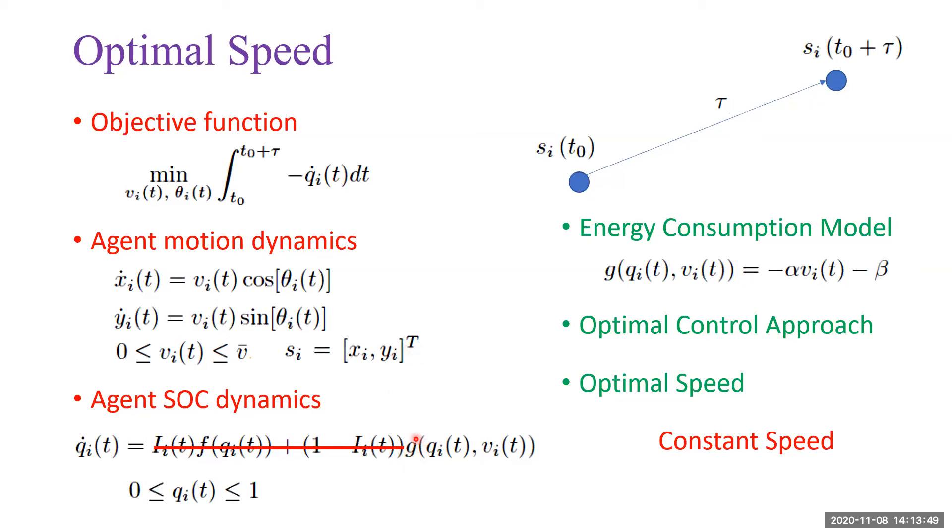Here is the objective function to minimize the energy cost to travel between two locations. Here the agent is in energy depletion mode. If the energy consumption model has this form, the first part is due to motion, the second part is due to sensing. We use the optimal control approach. We find the optimal trajectory is to follow a straight line connecting two locations, and the optimal speed is the constant speed determined by the distance and time τ.